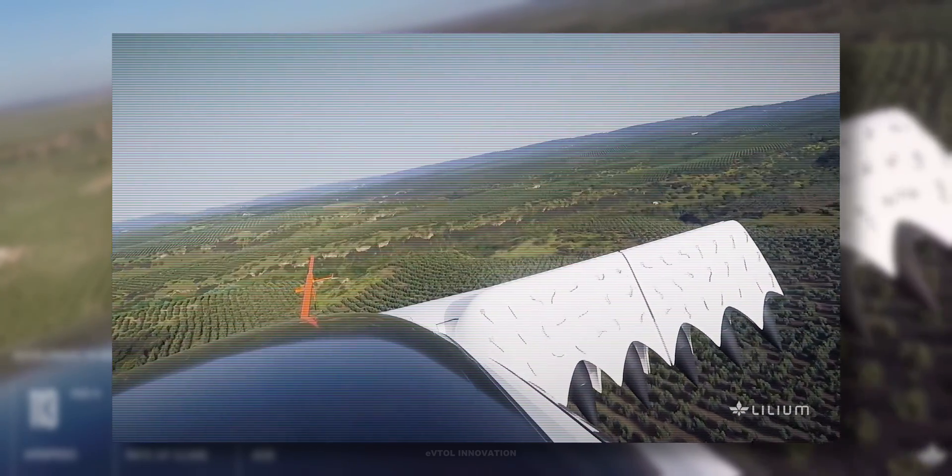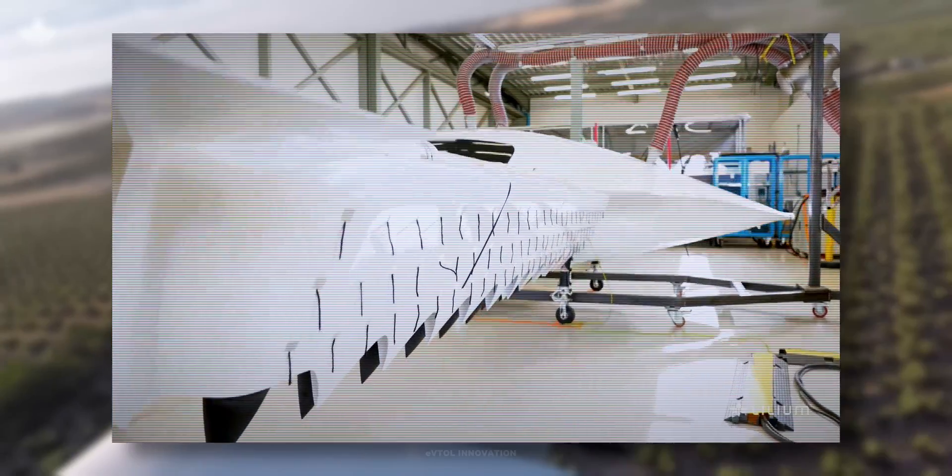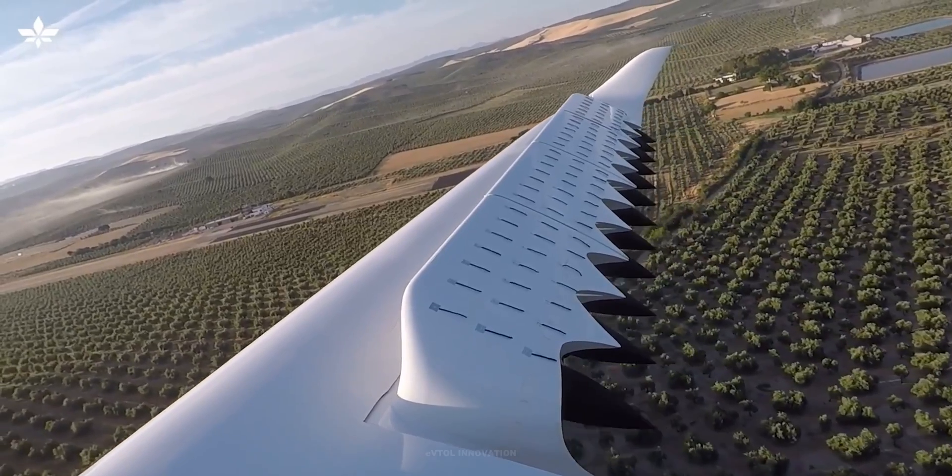And that's when we say, okay, the flow has now attached, and that's what we call transition. And that is visualized then by the tufts. When the flow attaches, the tufts become perfectly straight.